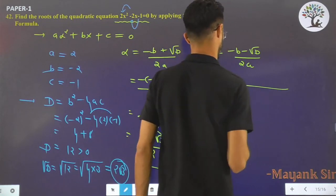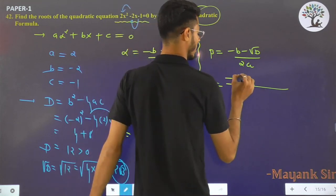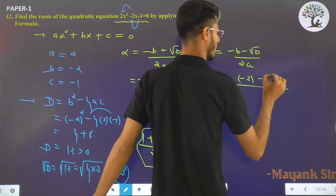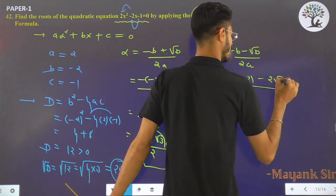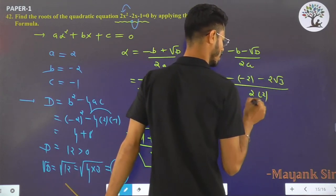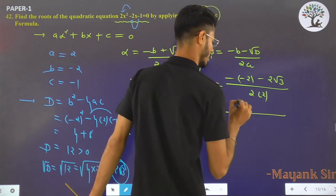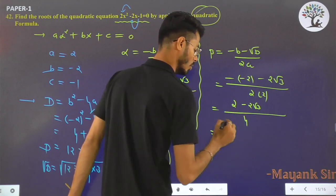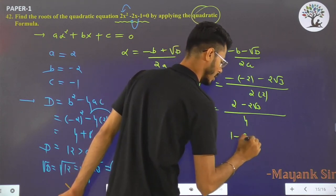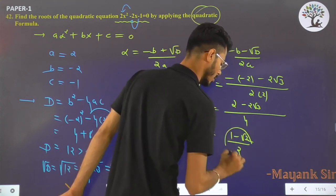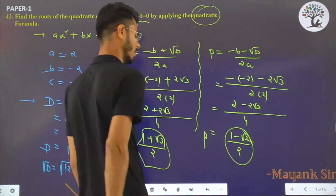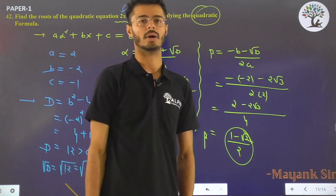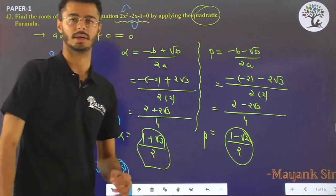Similarly, minus the value of b, which is -2, minus the value of √D, that is 2√3, divided by 2 times 2. 2 - 2√3 over 4. Take 2 common and cancel. That means (1 - √3) / 2. This is the value of beta, and that is the value of alpha: (1 + √3) / 2 and (1 - √3) / 2.